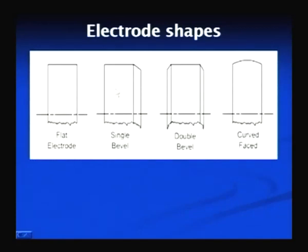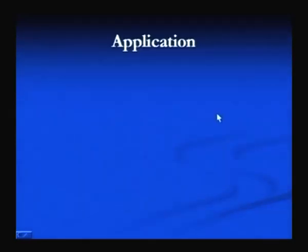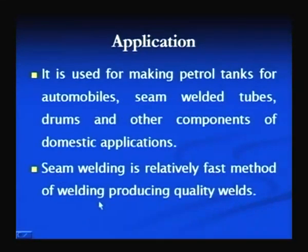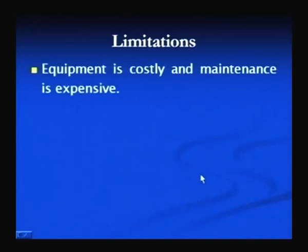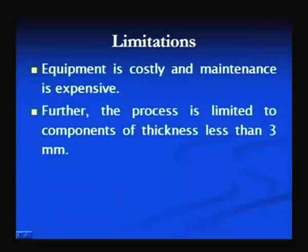These are the different shapes of rollers used in seam welding. The kind of pressure distribution required and the welding current determine which roller geometry is selected. Applications include making petrol tanks for automobiles, seam welded tubes, drums, and other domestic components. Seam welding is a relatively fast method for producing high-quality welds. However, equipment is costly and maintenance is also expensive. These processes are mainly limited to thin sheets — very thick sheets cannot be processed by resistance welding processes, particularly seam welding and spot welding.